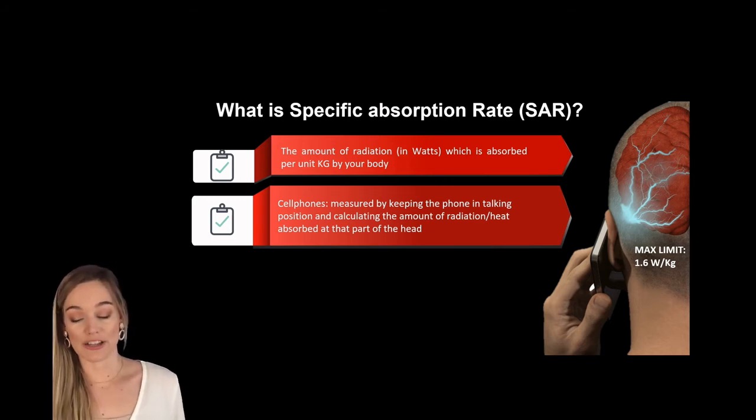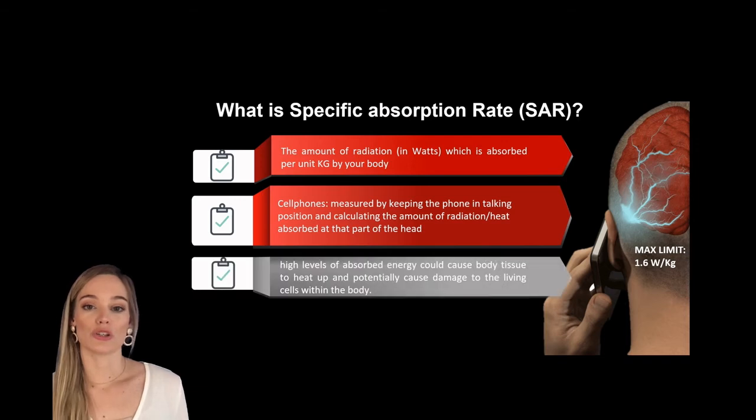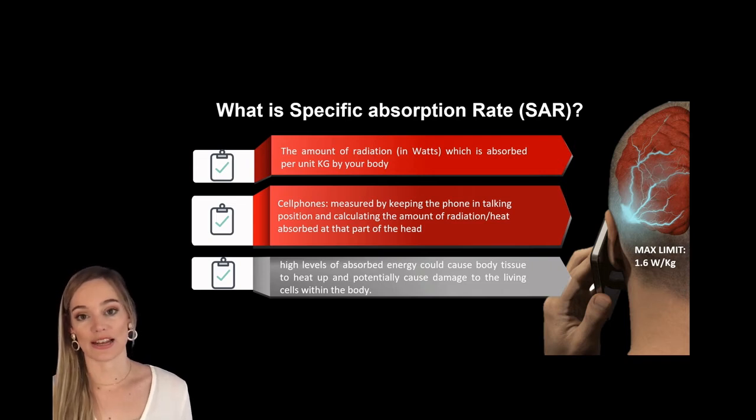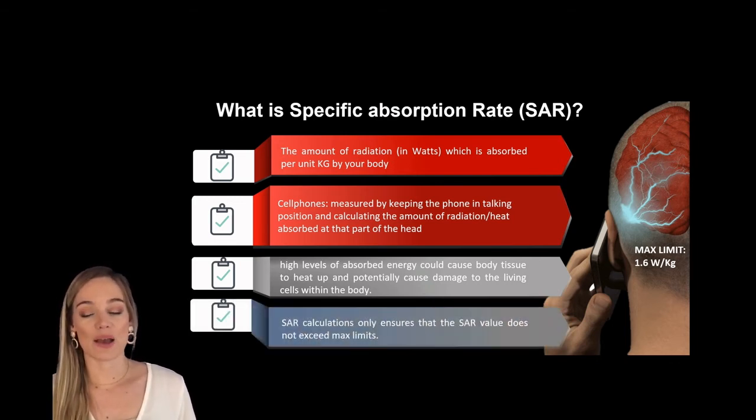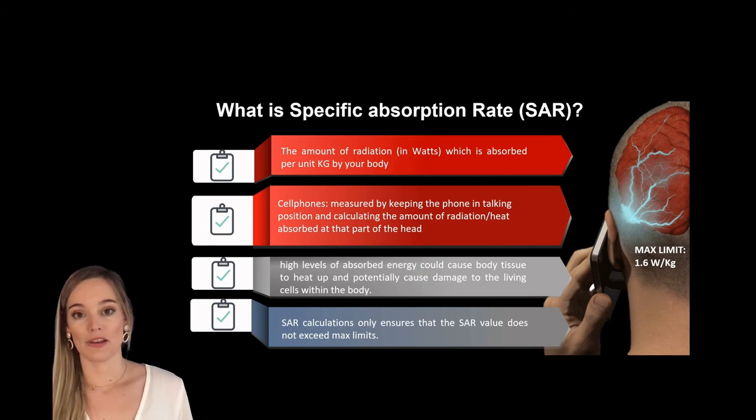As you can imagine, high levels of heat do have the potential to damage cells and so the SAR value ensures that it never reaches a level where the heat can cause damage to a cell. So basically what the SAR value is, it's the absolute maximum radiation or heat that is emitted from that device.